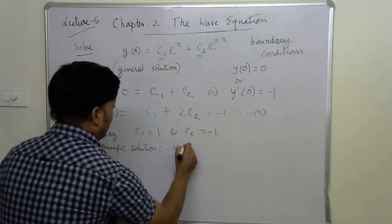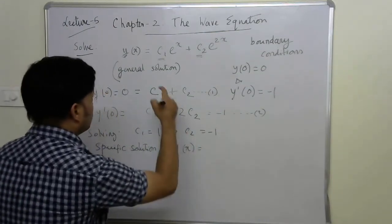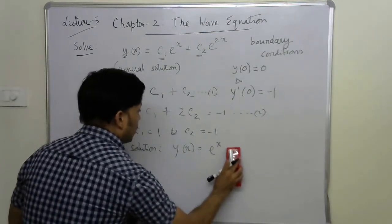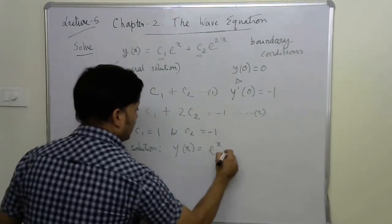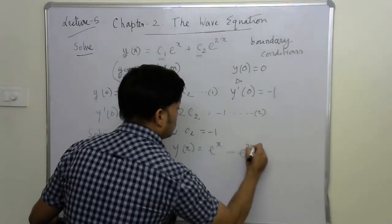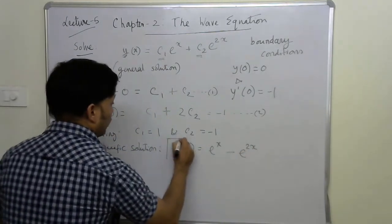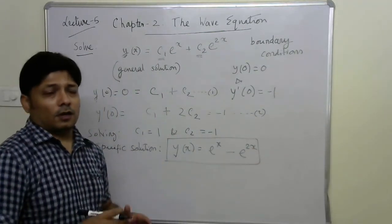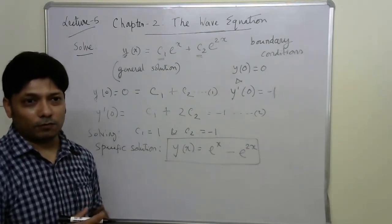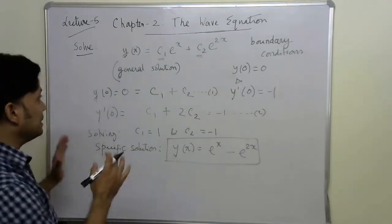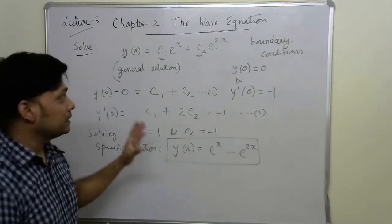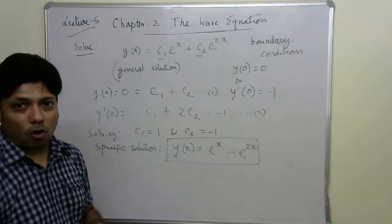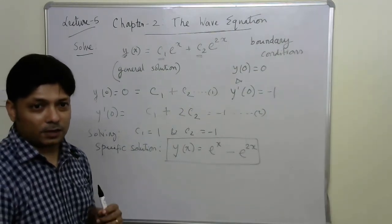Therefore, the specific solution is y(x) = e^x - e^(2x). This is how we solve a second order, linear, ordinary, homogeneous differential equation using the auxiliary equation method combined with boundary conditions.